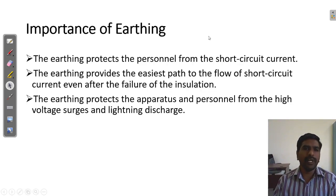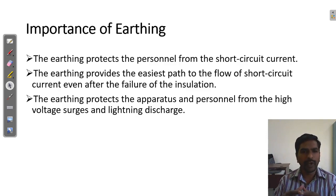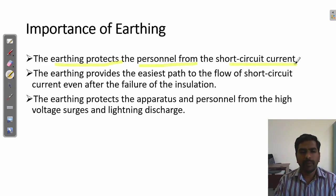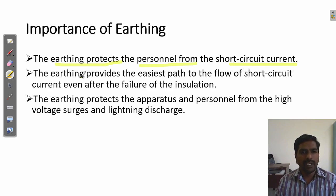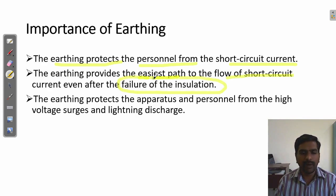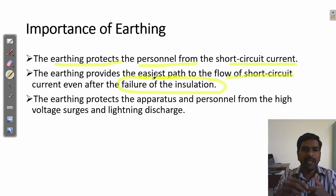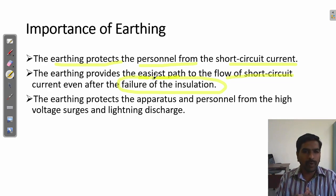Coming to the importance of earthing — why do we need earthing? The purpose and importance of earthing are the same. Here I am going to explain two more additional parts. First: earthing protects the person or human life from short circuit current — there may be an electric shock, and that electric shock current can be protected through earthing. Second: earthing provides the easiest path for short circuit current even after the failure of insulation. Whenever the insulator fails, the outer wire insulator gets damaged and the conducting layer is exposed — that failure case is also protected when you have proper earthing.